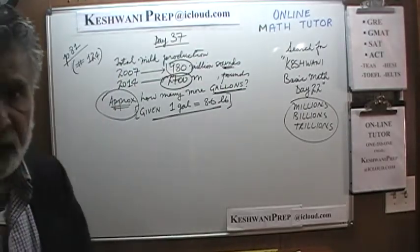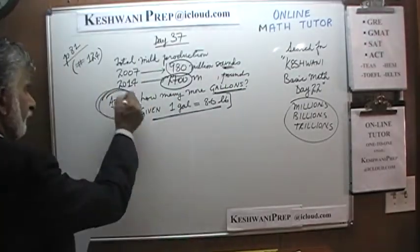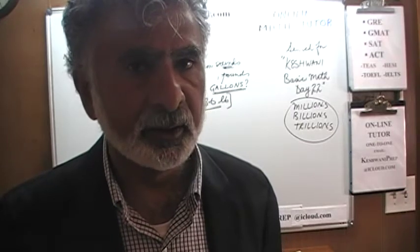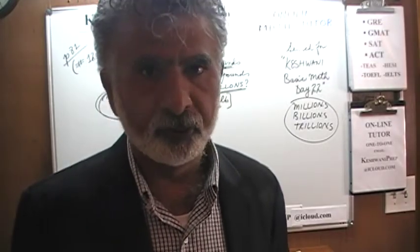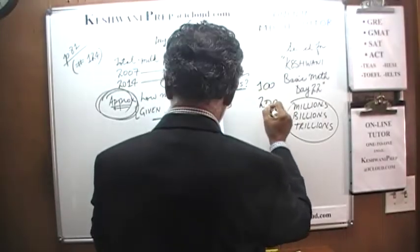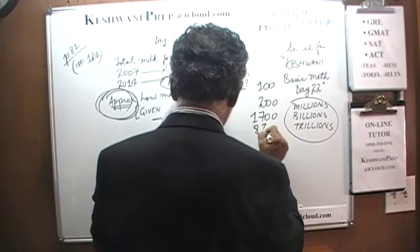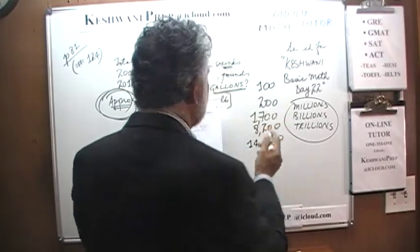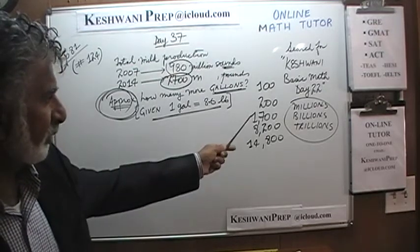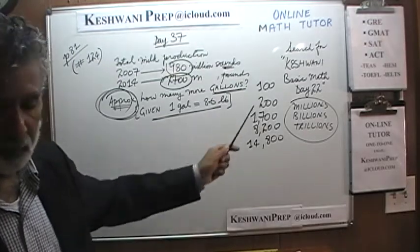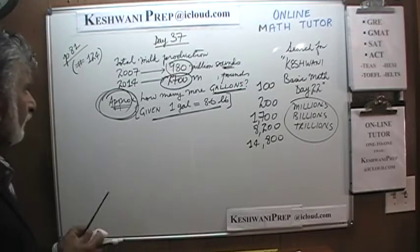Whenever the question uses the word 'approximate,' that is their subtle way of saying: look at the answers before you put in the work. The answer choices are 100, 200, 1,700, 8,200, and 14,800. As you can see, the answers are nowhere close to each other — especially C, D, and E, which jump from 2,000 to 8,000 to 15,000. That will determine how much work we put in; we don't have to be very accurate.